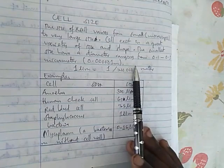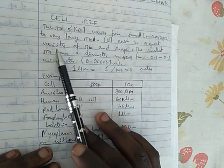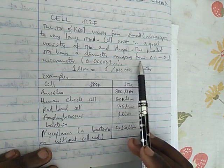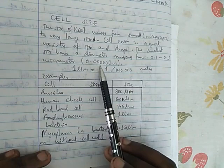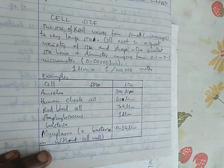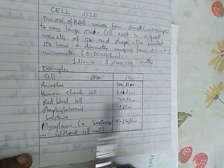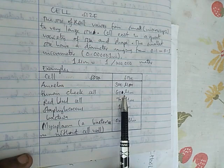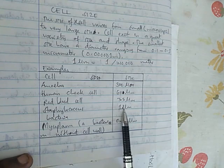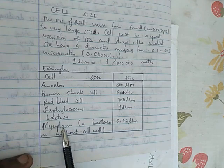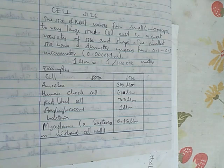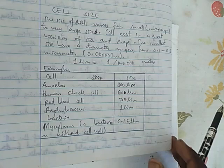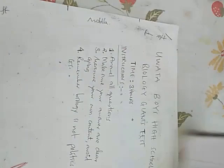Now, the size of the cell varies from small, that is microscopic, to very large size. Cell exists in great variety of size and shape. The smallest size have a diameter ranging from 0.1 to 0.3 micrometers. That is 0.0000001 meter. So that is the smallest size of cell. And here you can see this table, there's cell, then there's size. For example, amoeba cell is 300. Human cheek cell is 60. Red blood cell is 7.5. Staphylococcus, that is the bacteria, it is one. Staphylococcus bacteria. Then mycoplasma. Mycoplasma is also bacteria. Mycoplasma is the bacteria that doesn't have cell wall. Its size is 0.15 micrometers. So you can see these sizes. Here, amoeba has the biggest size.